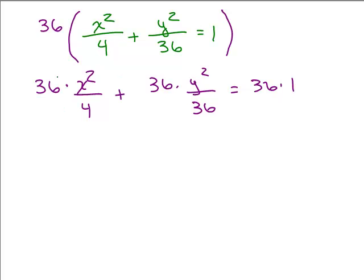So we have 36 times x² / 4 plus 36 times y² / 36 equals 36 times 1. So I could cancel the 4 into the 36 and that will give me 9x², 36 cancels, plus y² equals 36.